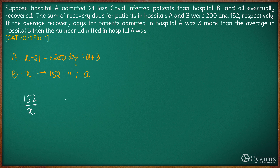The average for hospital A will be 200 divided by x minus 21. Since the average in A is 3 more than the average in B, we can form the equation: 200/(x−21) minus 152/x equals 3.